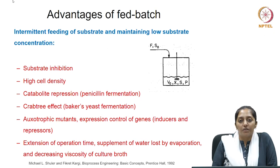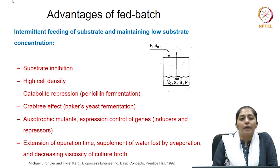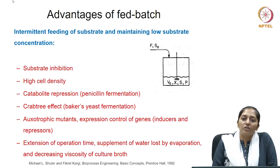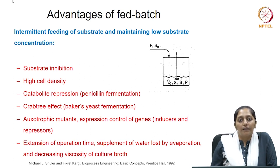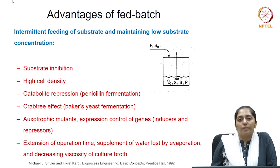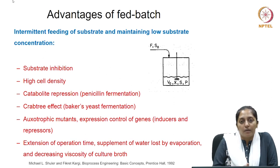In penicillin fermentation — penicillin being an antibiotic — the process is known to undergo catabolite repression because of the high amount of glucose present in the medium. A fed batch process can help in maintaining the glucose concentration inside the reactor at levels which do not allow catabolite repression to occur, by manipulating the glucose feed rate inside the reactor.